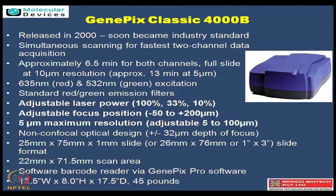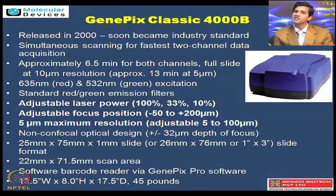GenePix classic 4000B has 6.5 minutes of simultaneous scan - meaning both lasers scan at the same time, so you have very little time for scanning. Apart from that it has two lasers - 635 and 532 nanometers - which are classically used for Cy3 and Cy5 and their own compatible dyes. In view of this, it has standard green and standard red emission filters to accommodate all Cy3 and Cy5 applications.